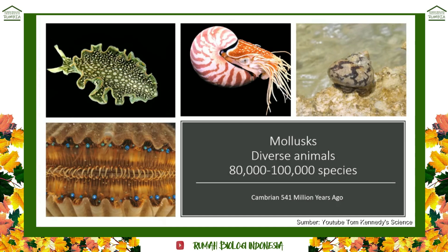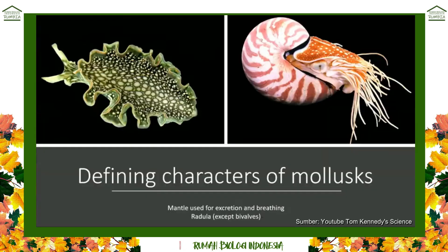Overall there are about 80,000 to 100,000 species of mollusks worldwide, and they're an ancient lineage — they date all the way back to the Cambrian, over 541 million years ago. There are four major groups of mollusks that we'll talk about.